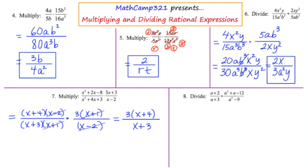I prefer to leave my answer in fully factored form — it lets the reader know that there are no additional things that can be canceled out. Many textbooks might distribute the 3 back through, but I personally like it completely factored as 3(x + 4) over (x + 3).